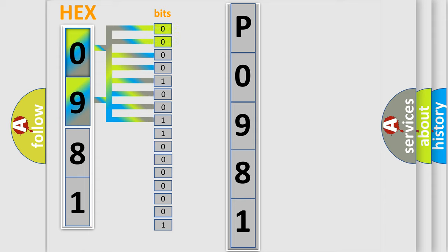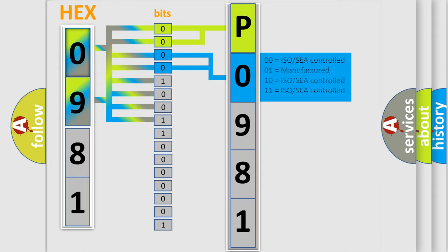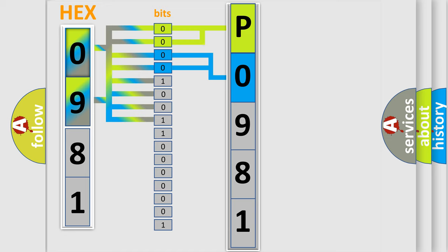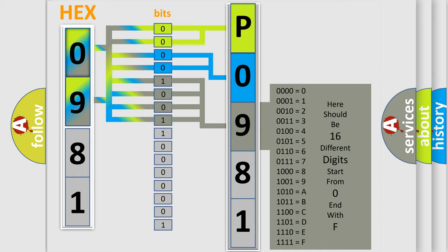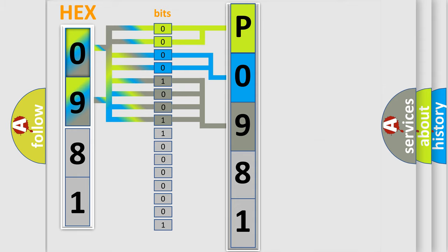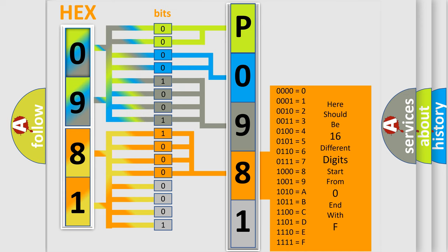By combining the first two bits, the basic character of the error code is expressed. The next two bits determine the second character. The last bits of the first byte define the third character of the code. The second byte is composed of a combination of eight bits — the first four bits determine the fourth character of the code, and the combination of the last four bits defines the fifth character.